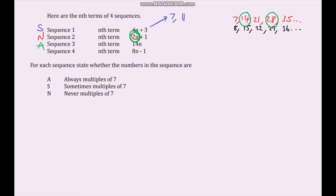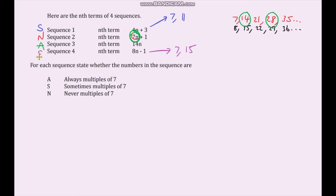For the last sequence, we can list out a few terms. We can see that we've got a multiple of 7 for one term but not for another. So that sequence is sometimes going to be a multiple of 7.